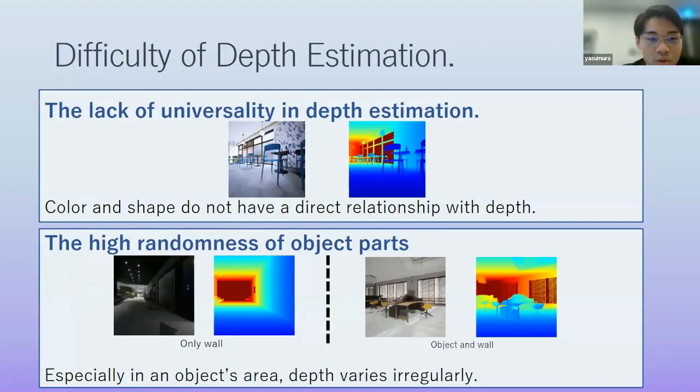From this previous research and our research, we assume there are these difficulties of depth estimation. First, the lack of universality in depth estimation. Color and shape and other features in image do not have a direct relationship with depth. So in this figure, we can see same color and same shape difference in depth, but the depth is obviously different. So it is one reason why difficult to estimate depth. Next, the high randomness of the object part. Compare a picture it contains only walls to the image it contains objects and walls. Especially in the objects area, the depth varies more irregularly, and these objects is scattered throughout the background, so it makes estimation more difficult.